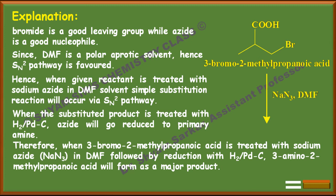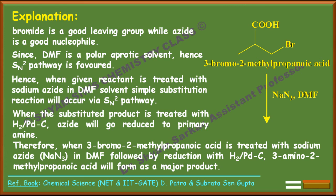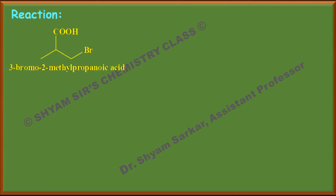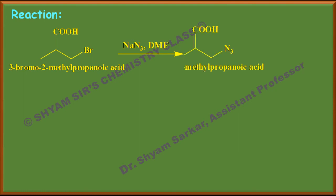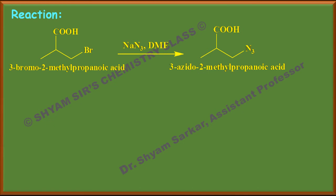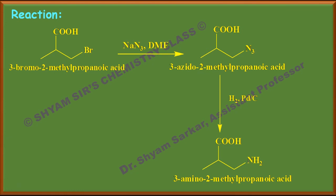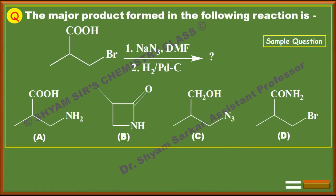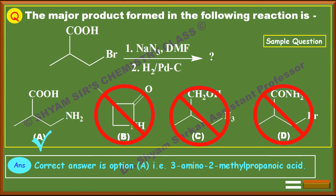Step by step: 3-bromo-2-methylpropanoic acid treated with sodium azide in DMF gives 3-azido-2-methylpropanoic acid. Reducing this with hydrogen in the presence of palladium catalyst and charcoal gives 3-amino-2-methylpropanoic acid. The correct answer is option A — 3-amino-2-methylpropanoic acid.